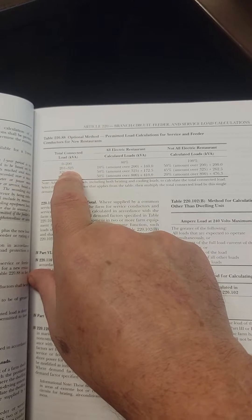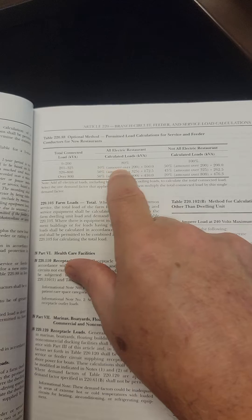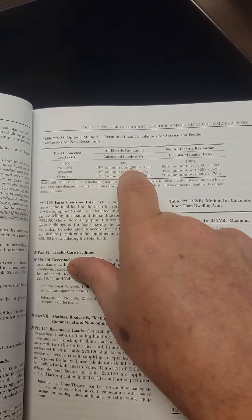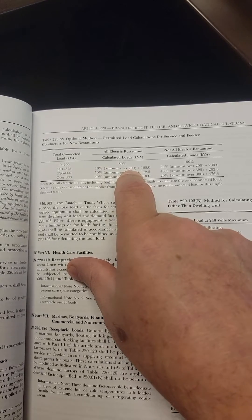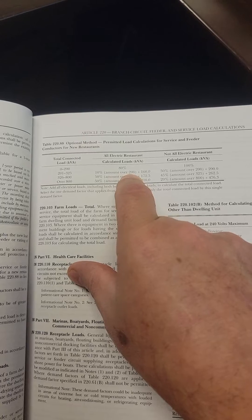Okay, so it falls between 201 to 325. So you take the amount that's over 200, in this case 40, because it was 240 kVA, that's the total connected load.